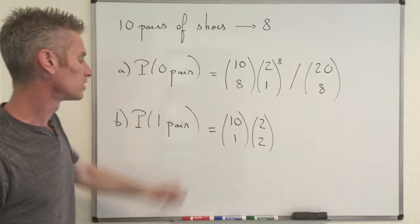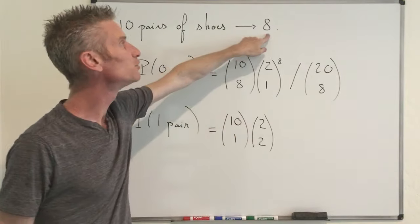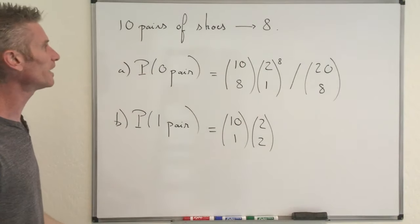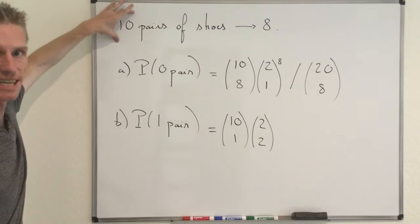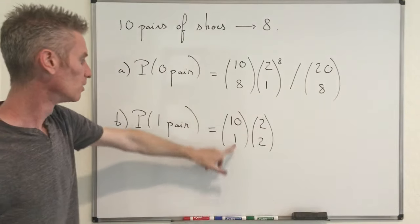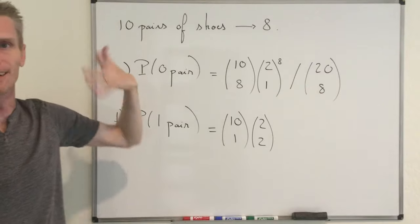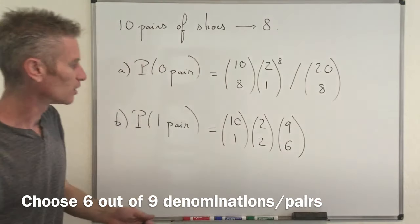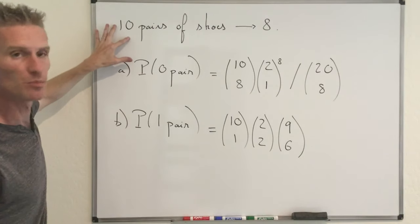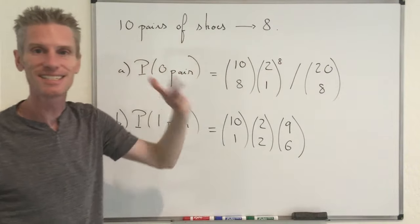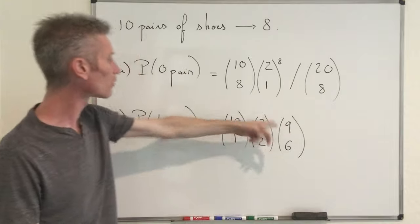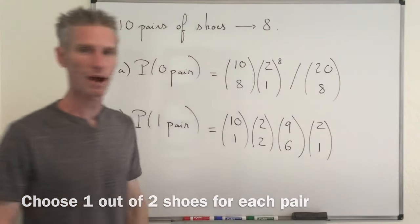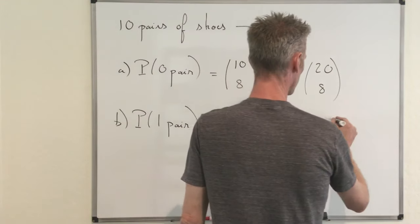You want to make sure the remaining six shoes are not from the same pair. You already chose one pair to have your complete pair, so you still need to choose 6 of the 9 remaining pairs — that gives you 9 choose 6. You are going to take your six remaining shoes from those six pairs. Exactly like before, you have two possibilities for each pair — right or left — so you choose one from each, giving you 2 choose 1 to the power of 6.